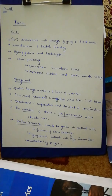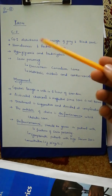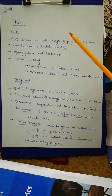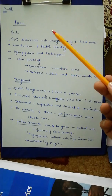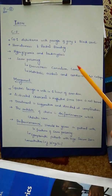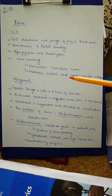Iron poisoning occurs especially in women. Clinical features include GI disturbance with passage of gray and black stools, hematemesis (vomiting blood), and rectal bleeding, hyperglycemia, and leukocytosis. In severe poisoning: drowsiness, convulsion, coma, metabolic acidosis, and cardiovascular collapse. Keep in mind that many symptoms of poisoning can be confusing, so history — from the patient, witnesses, and relatives — is very important to get the right direction for treatment.